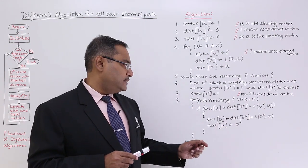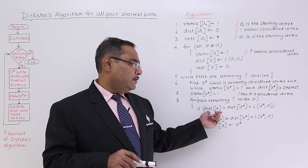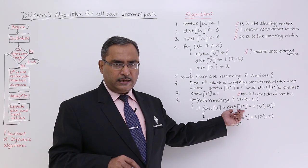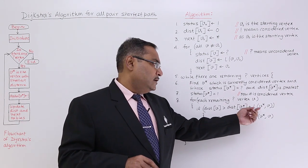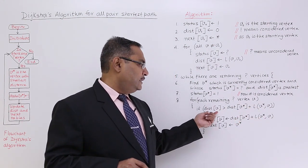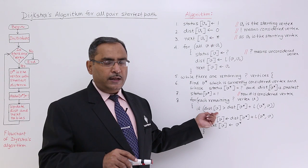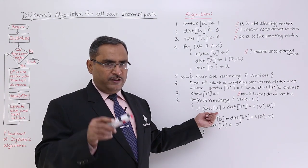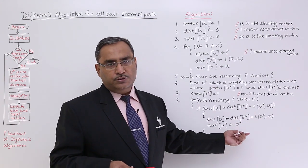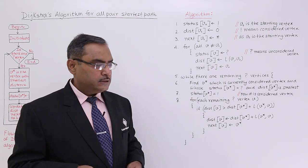That is, if the dist of V written for the particular V, the distance value is greater than distance of V star plus distance between V star to V, and if the sum is lesser than this, that means I am getting a shorter solution, that is the distance will be lesser if you go through V star. So this dist of V will be updated with this particular expression and next of V obviously should be marked with this V star because the distance has been measured from V star onwards.